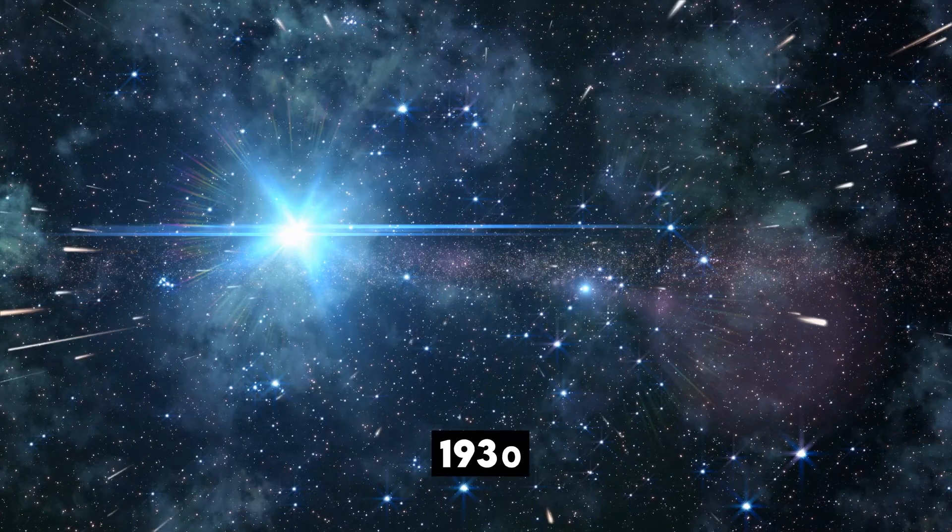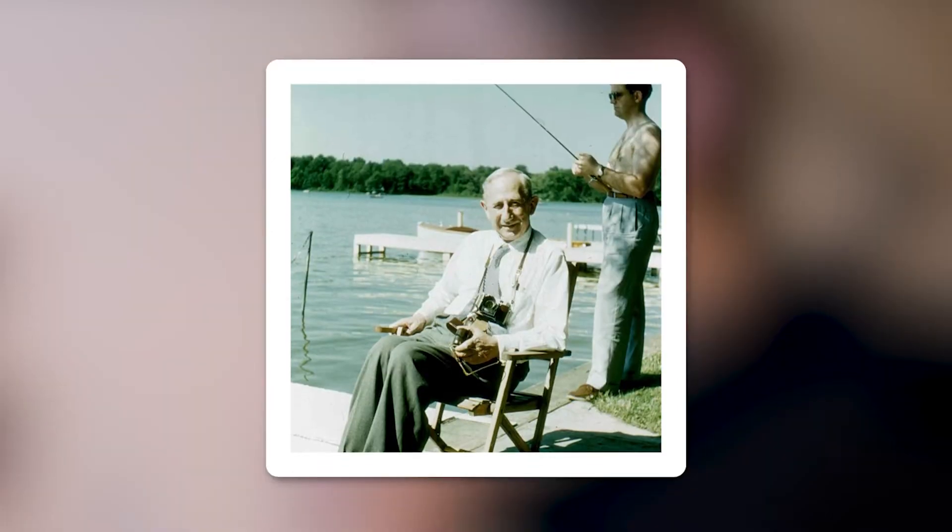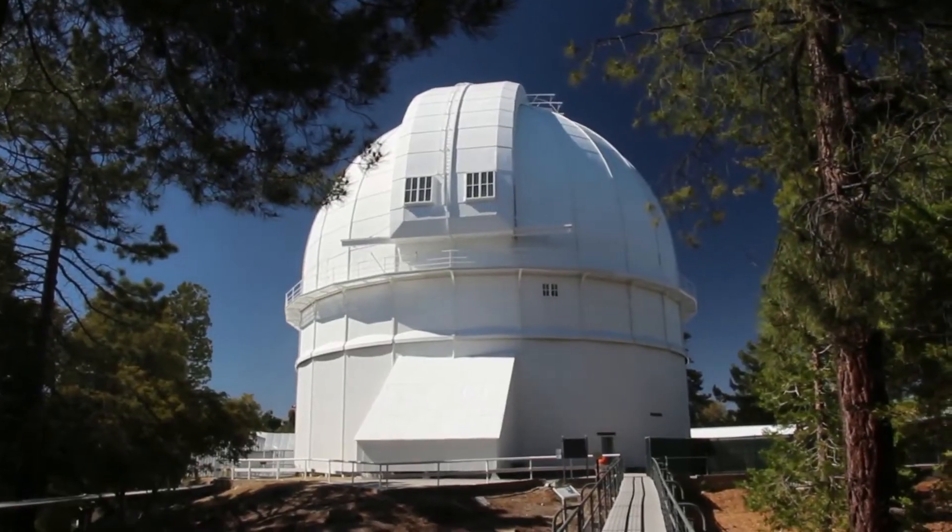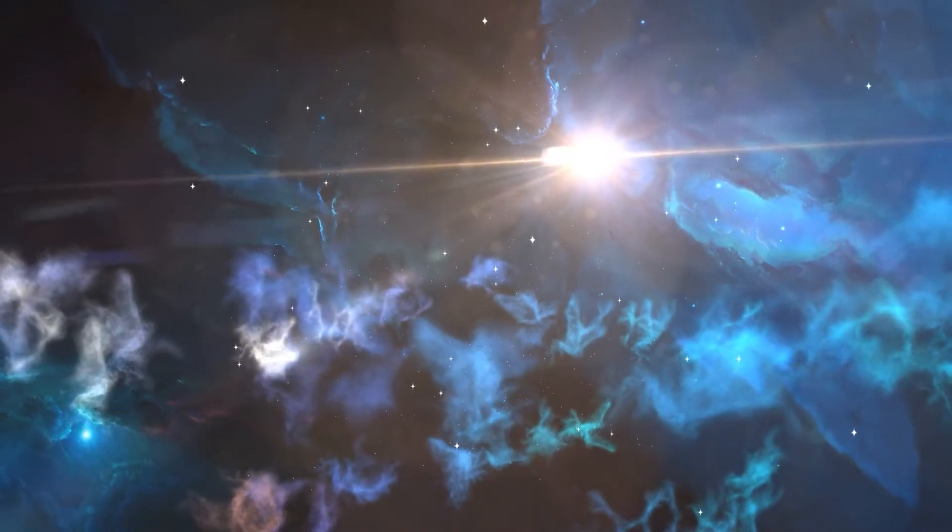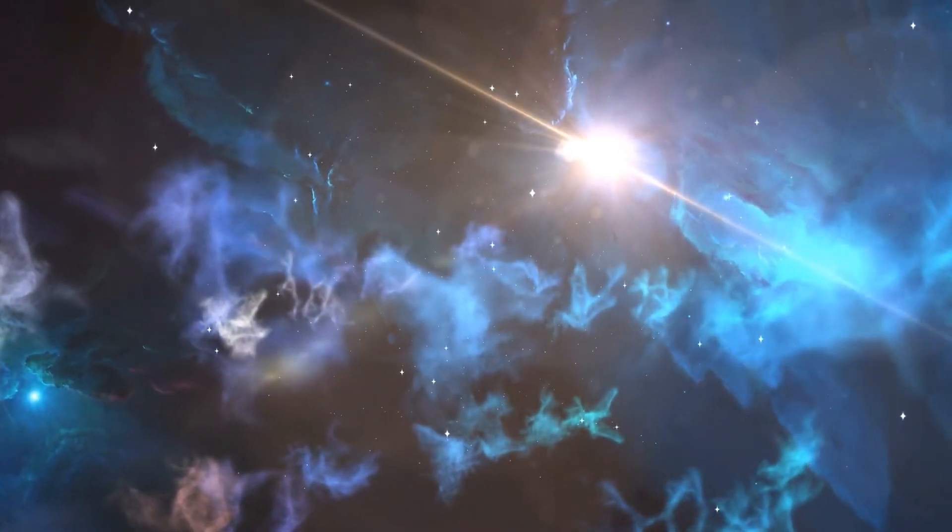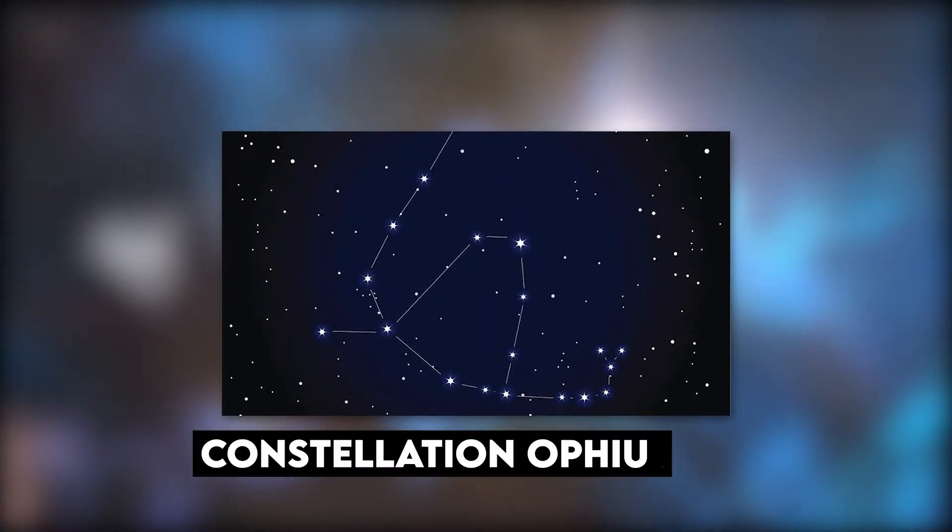It wasn't until the 1930s that supernovas were discovered and explained by Walter Bade and Fritz Zwicky at California's Mount Wilson Observatory. Kepler's star was eventually discovered to be a supernova remnant, connected with the remnant SN 1604, in the constellation Ophiuchus.